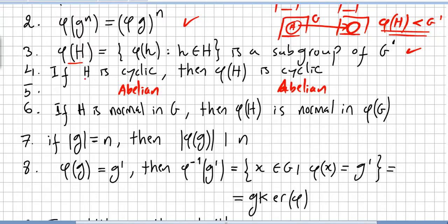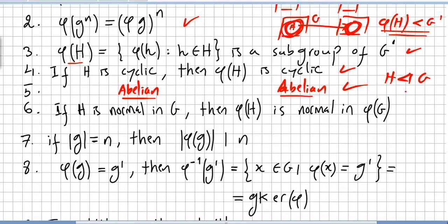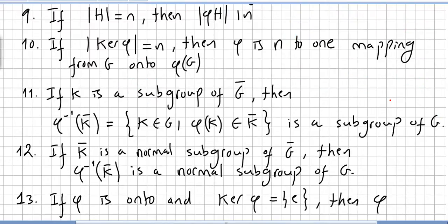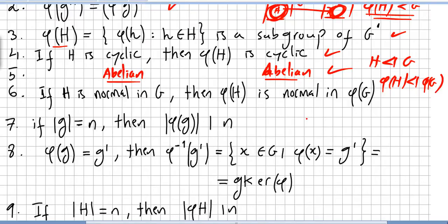If H is cyclic, then phi of H is cyclic. If H is abelian, then the image phi of H will also be abelian. If H is normal in G — meaning the left cosets equal the right cosets — then phi of H is normal in the image of G. That is, phi of H will be a normal subgroup of phi of G.